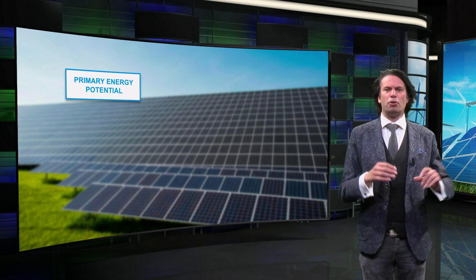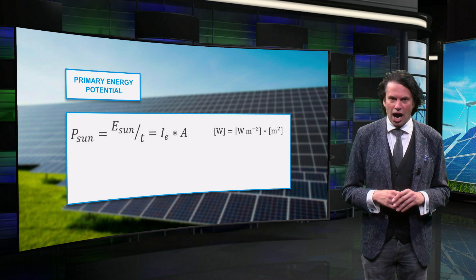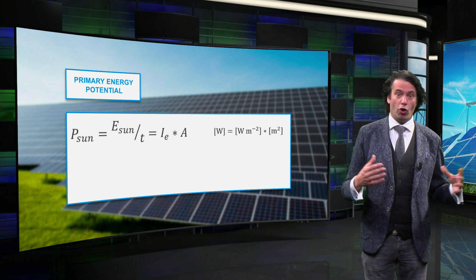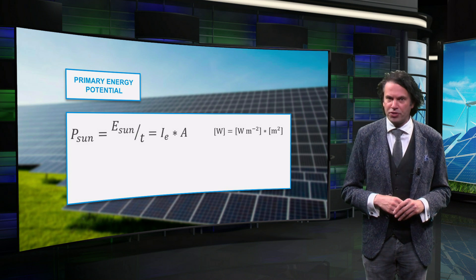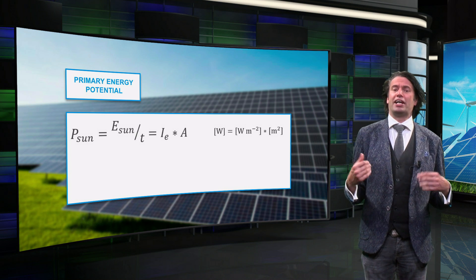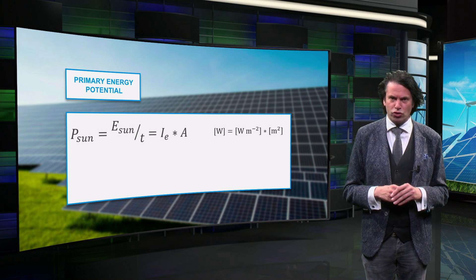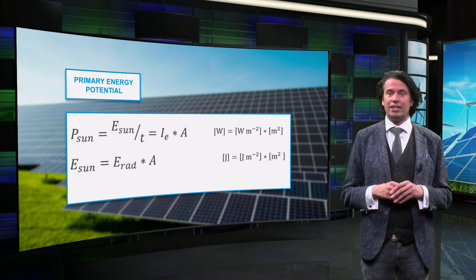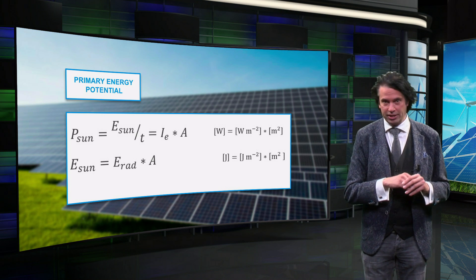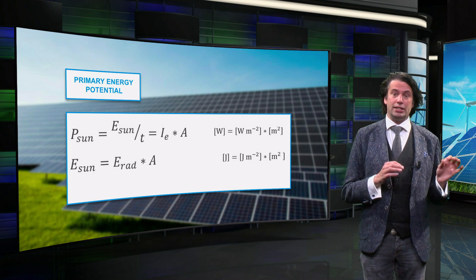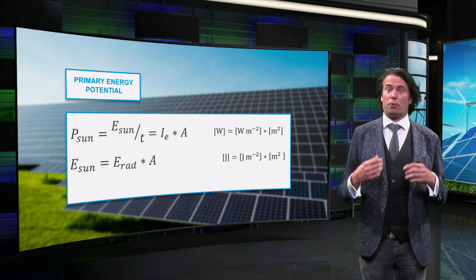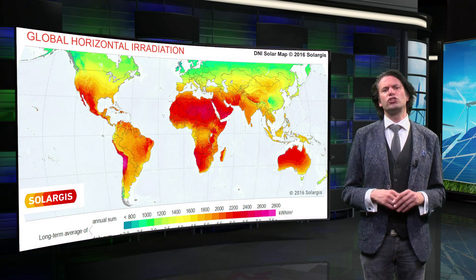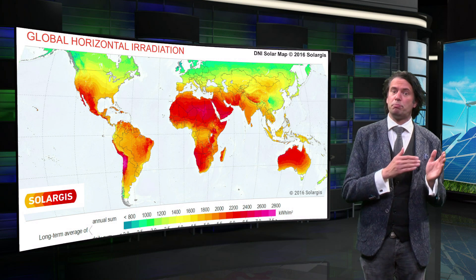We can characterize the power of the sun by the irradiance, i.e. the amount of energy per second incident on the surface of the Earth per square meter, expressed in watts per square meter. In order to find the potential of solar energy, we can integrate the irradiance over a certain amount of time to obtain the irradiation, or incident energy density. The total energy potential E_sun for a certain PV panel is equal to the product of the irradiation and the area of the panel A. The solar irradiance strongly depends on the angle of the sun with respect to the Earth's surface.